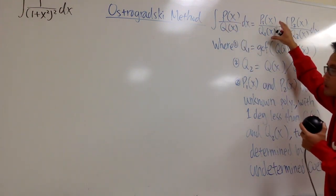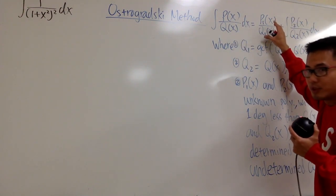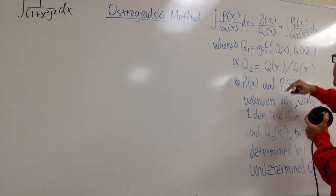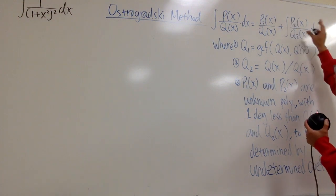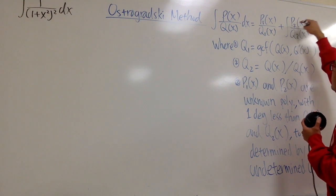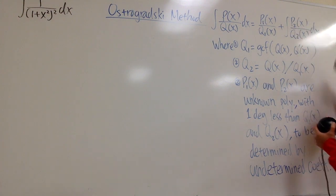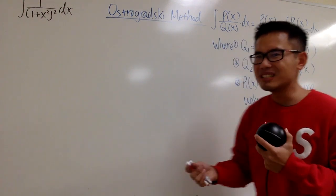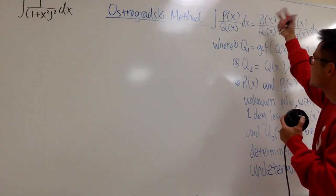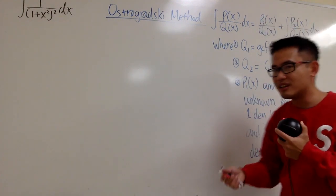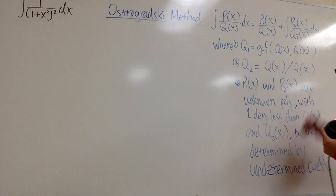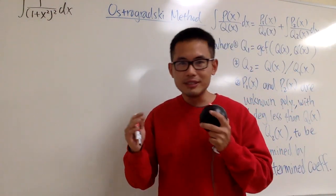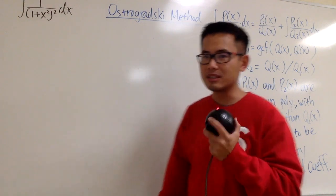Anyway, this is equal to the first part of the answer already, p1 of x over q1 of x, and I will tell you guys what p1, q1s are. And then we add it with another integral, an integral p2 of x over q2 of x dx. It's kind of like partial fraction along with integration by parts, because the first part is the first part of the answer, and then we still have to add it with another integral. So that's kind of like integration by parts style, and it's also similar to the partial fraction style.